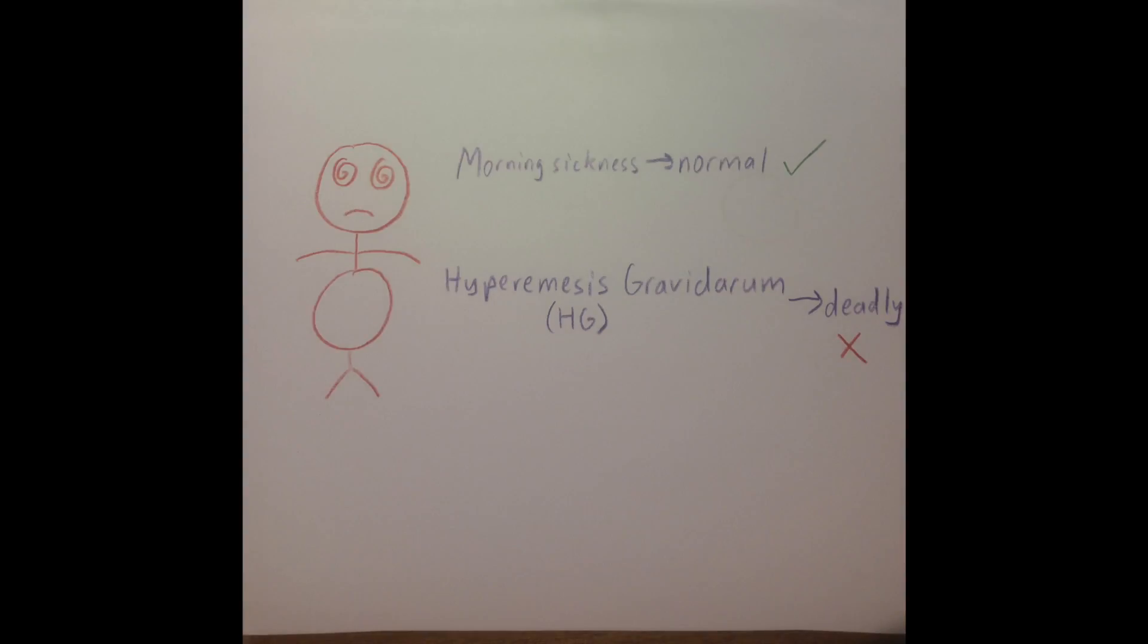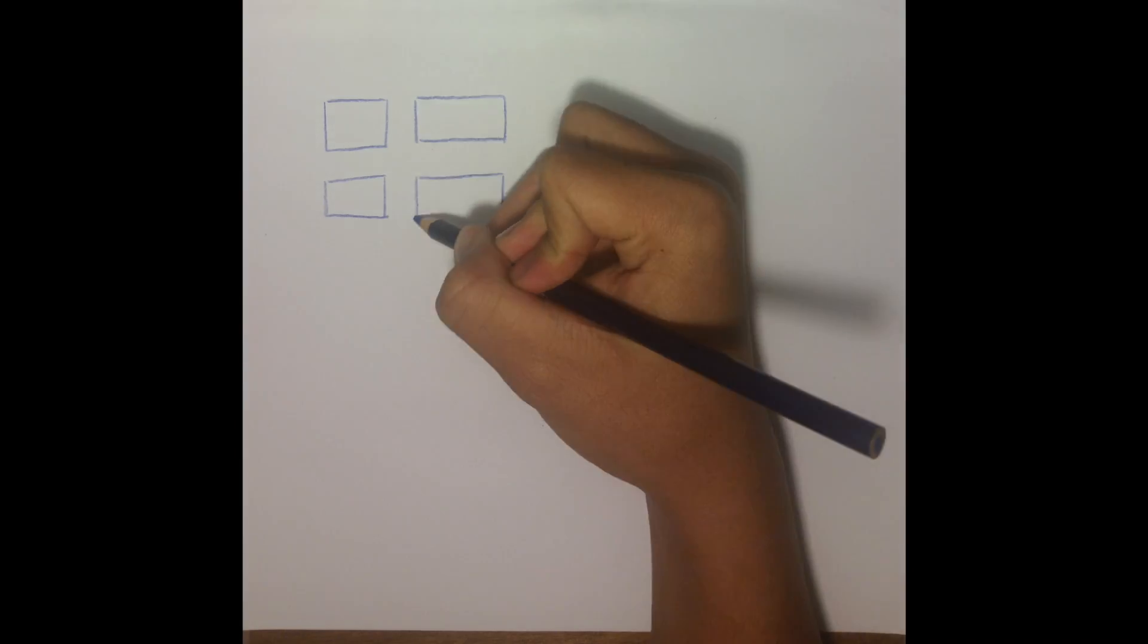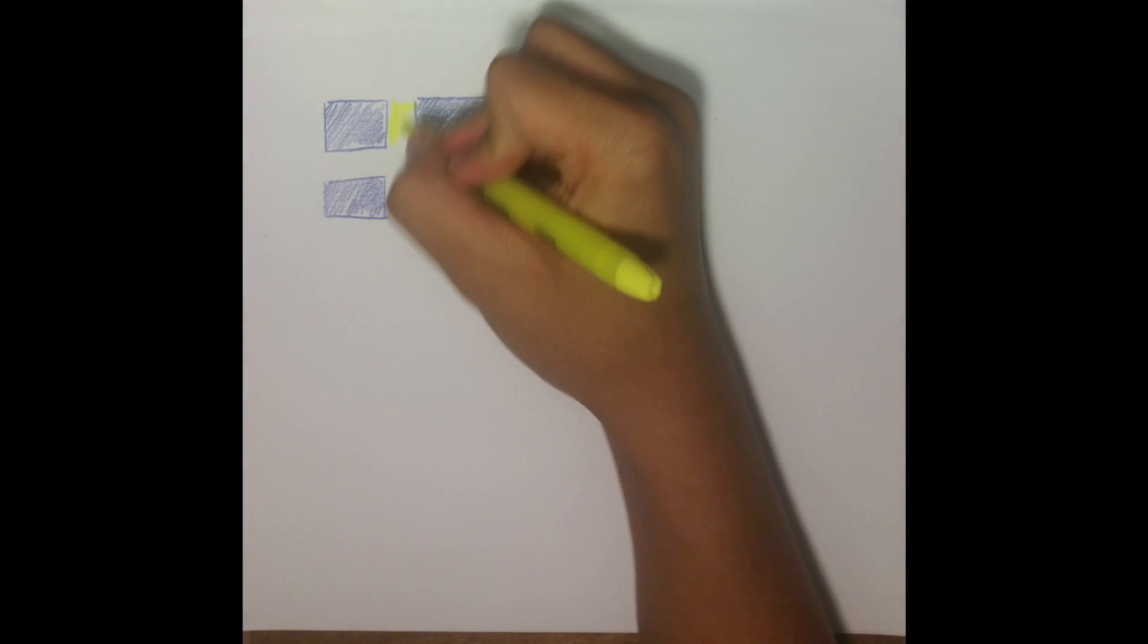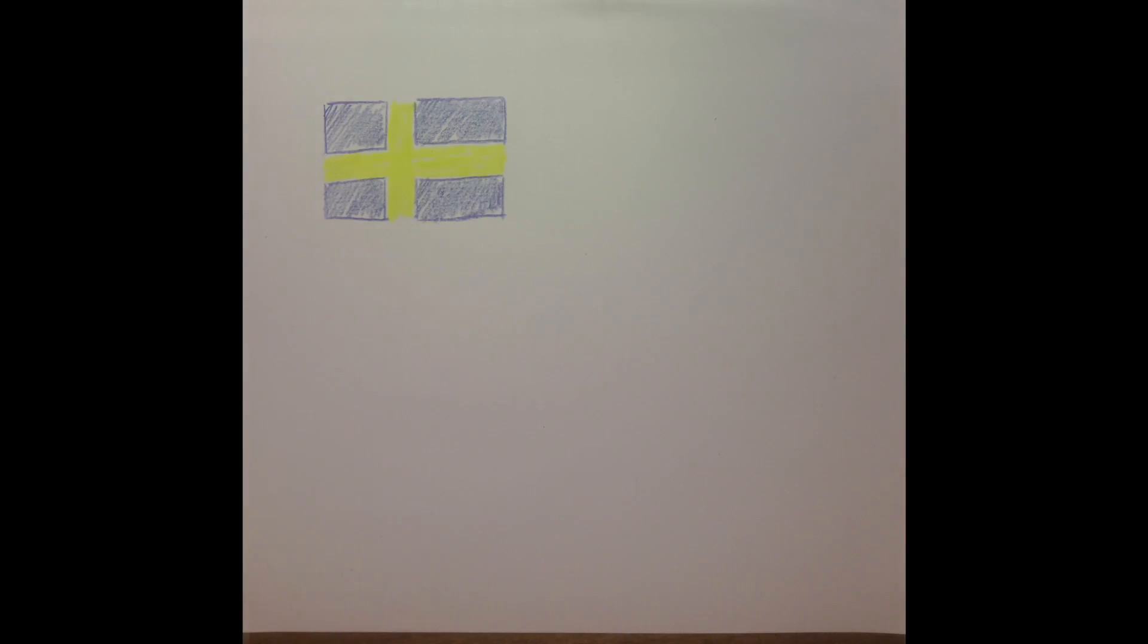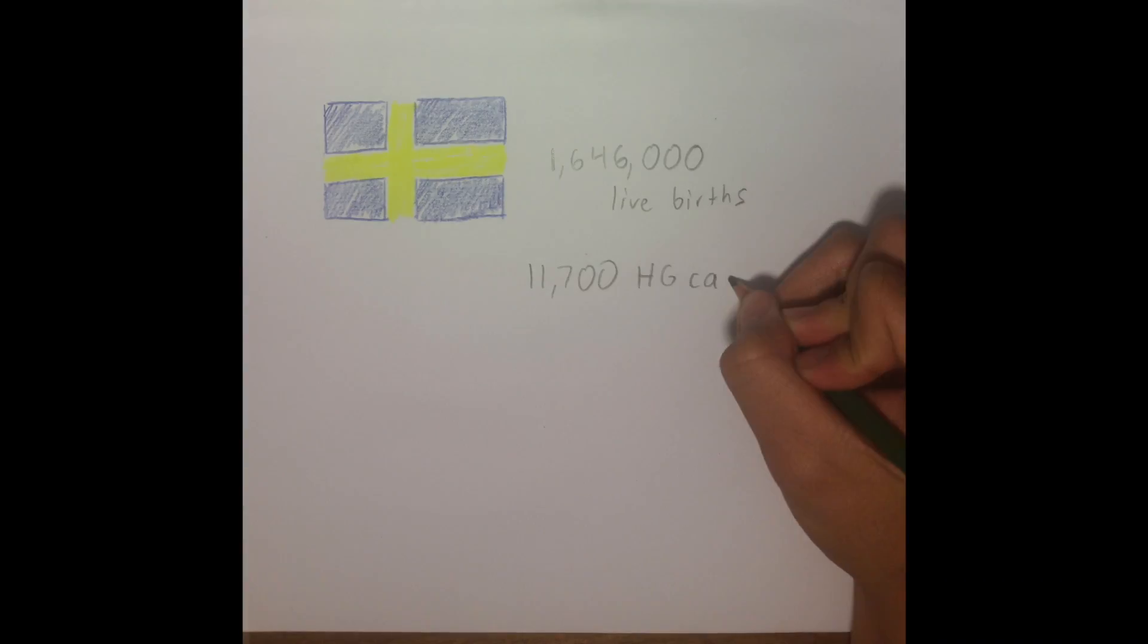This study looked at data on 1.646 million live births in Sweden. Of these 1.646 million live births, 11.7 thousand were HG cases.